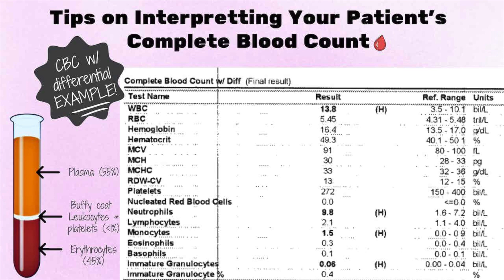Looking at this example on the slide, the patient had an elevated white count of 13.8 — not extremely high, but elevated. When we look at the differential, the elevation is mostly in neutrophils, with an elevation in monocytes as well. The elevation in neutrophils likely indicates that this patient had a bacterial infection. Of course, this is only a small part of the whole picture — there's much more information needed when diagnosing a patient, but the CBC provides a lot of useful information.